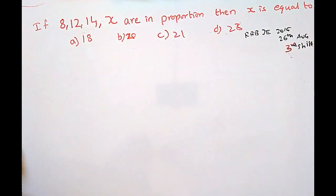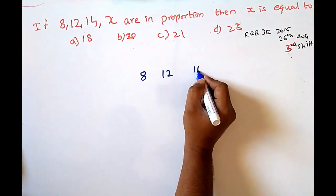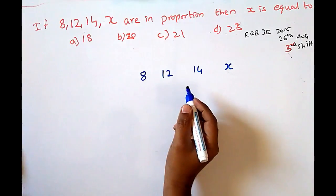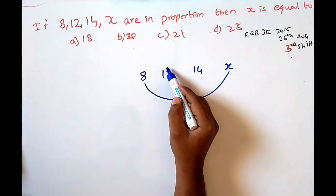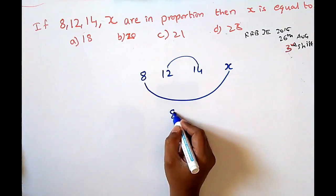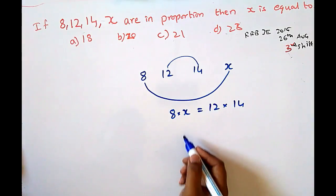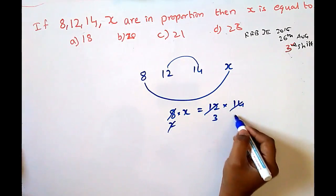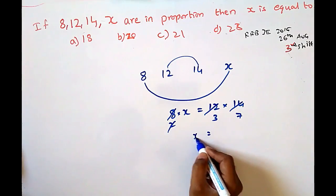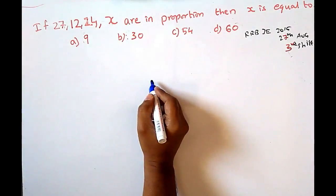If 8, 12, 14, x are in proportion, then the product of extremes equals the product of means: 8 × x = 12 × 14. So 8x = 168, giving x = 21.